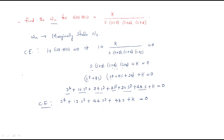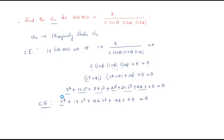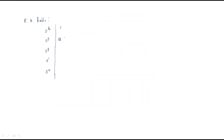Now we apply the Routh-Hurwitz table. The maximum order is s⁴, so the table rows are s⁴, s³, s², s¹, and s⁰. Writing in the coefficients: s⁴ row is 1 and 44; s³ row is 12 and 48; s² row is 40 and K. These values are computed directly.